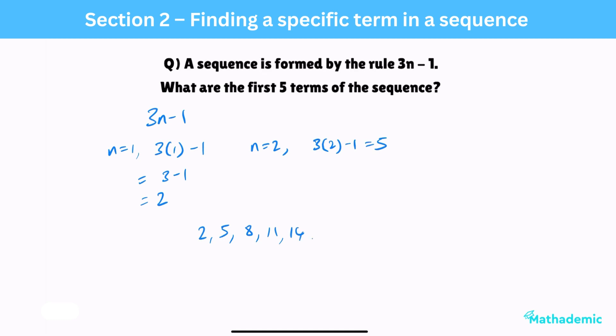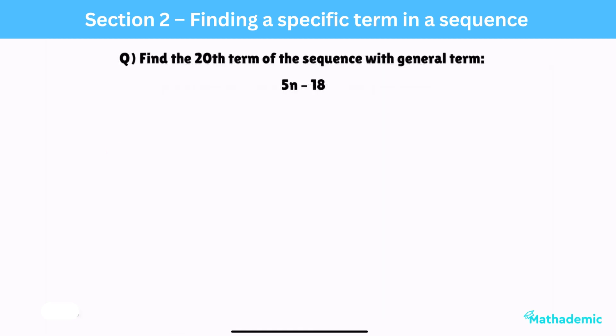We can extend this idea to find terms much deeper in the sequence. Take a look at this problem for example. Find the 20th term of the sequence with general term 5n-18. As before, since it's the 20th term we're looking for, substitute 20 in place of n. We get 5 times 20, which is 100, and then subtracting the 18 gives us 82.